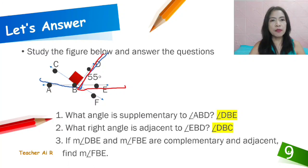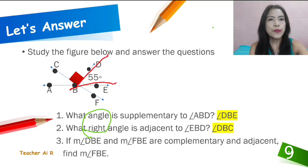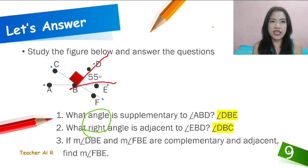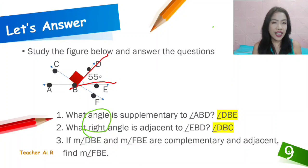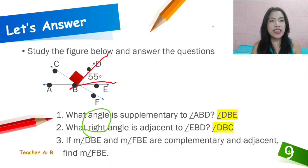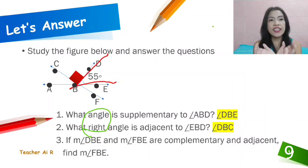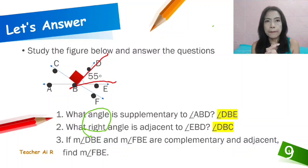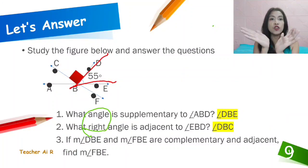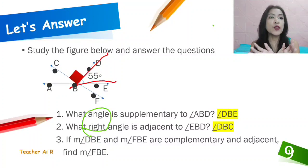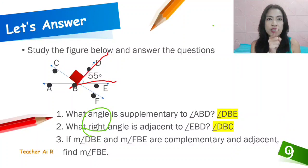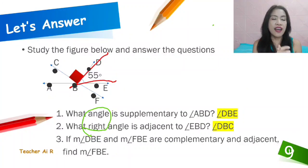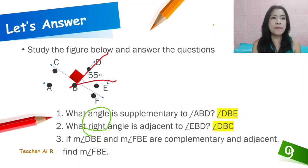Okay. Next one is number 2. For number 2, the red one is the angle ABD. And what is being asked there is the right angle that is adjacent, meaning the right angle beside it. So the right angle beside it is the angle DBC. That's the one beside it, because that's the only one with a right angle there. That means that's the only one at 90 degrees. As you could see, there's red and it has a box, it has a red box inside it. So that's the right angle. Your answer is angle DBC.